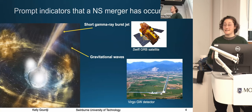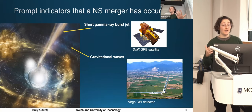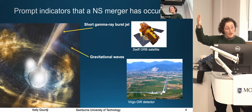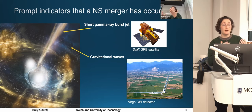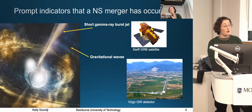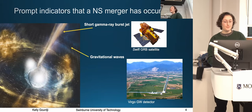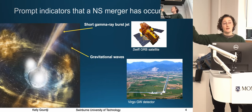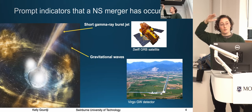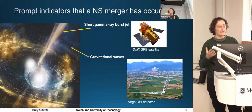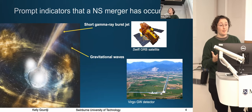There are two types of prompt indicators that tell us a neutron star merger has just occurred. The first and longest-used one is a short gamma ray burst, caused by a relativistic jet launched when a double neutron star system merges, or possibly when a black hole and neutron star coalesces — though that's yet to be confirmed. These are typically detected by gamma ray burst detectors in orbit, which have built up a sample of hundreds of short gamma ray bursts over the last few decades.